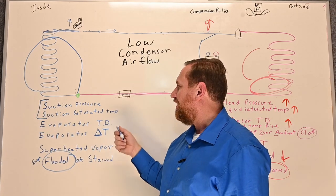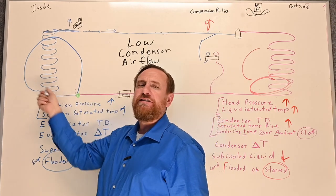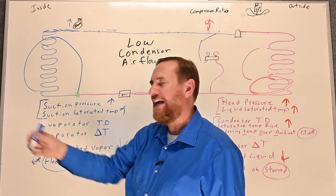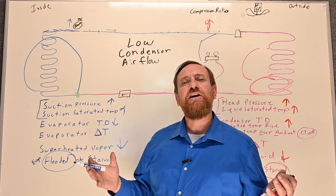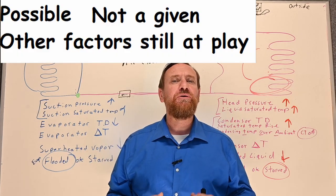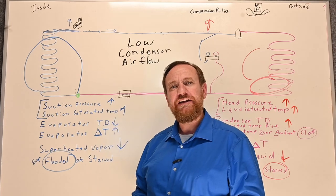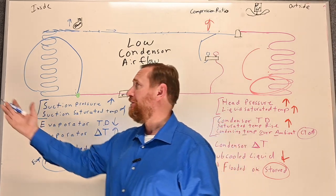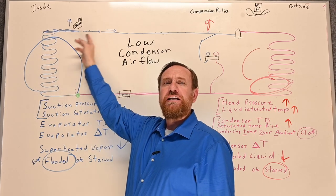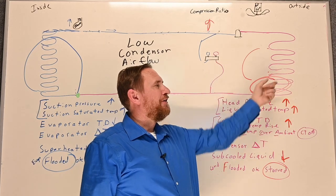That's also going to cause our suction pressure to start going up, and our suction saturated temperature to go up as well. Because the saturated temperature is warmer and closer to the air temperature, our evaporator TD is going to start to drop. However, our evaporator delta T could actually go up because we have more liquid refrigerant in the evaporator coil, potentially absorbing more heat — the temperature difference between incoming and outgoing air becomes greater. On top of that, there's potential for more liquid refrigerant coming back to the compressor, which could damage it.